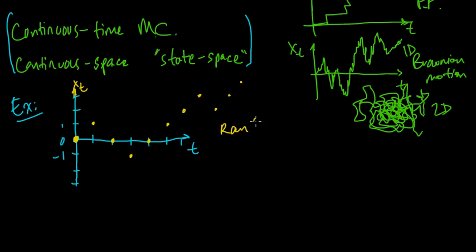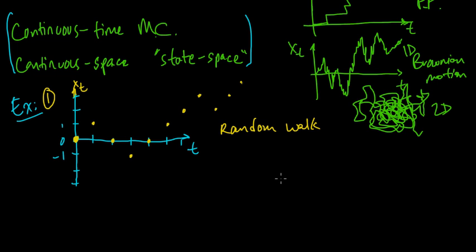This is called a random walk — discrete time and discrete space — and you can see how it's a simplification of 1D Brownian motion. In the next video we'll look at one more example of a discrete time discrete space Markov chain, then start to analyze its limitations, which will lead us to hidden Markov models.